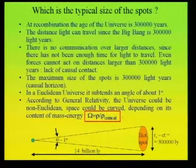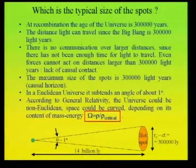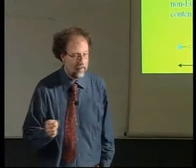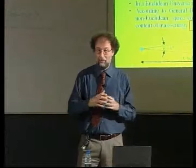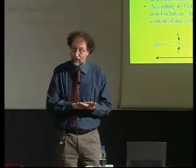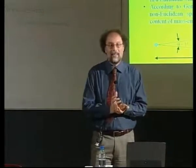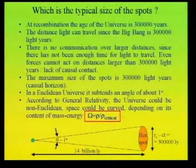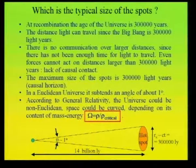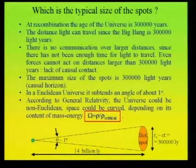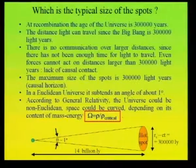What is the typical size we expect for these cold and hot spots? At recombination, the age of the universe is 300,000 years. The distance light can travel since the Big Bang to that epoch is 300,000 light years. There is no communication over larger distances because there has not been enough time — there is a lack of causal contact between distances larger than 300,000 light years. So the maximum size of the spots we expect cannot be larger than 300,000 light years. We have a structure of 300,000 light years at a distance of 14 billion light years, and taking into account a factor of 1,000 for the expansion, you find that you will see that structure under an angle of one degree.